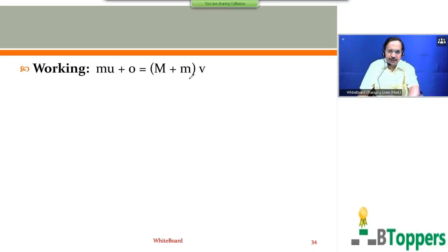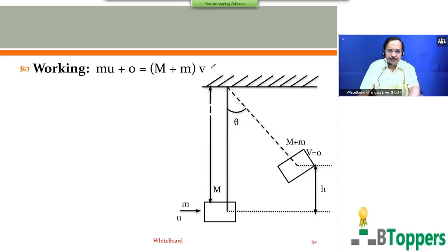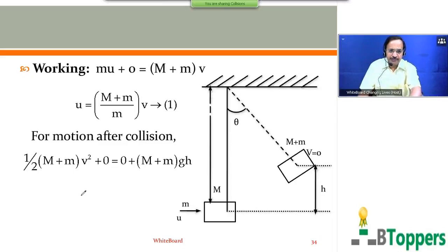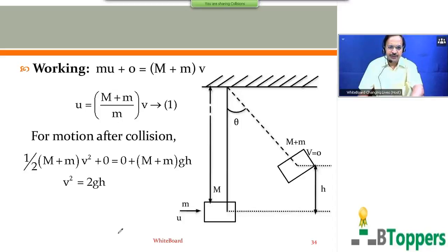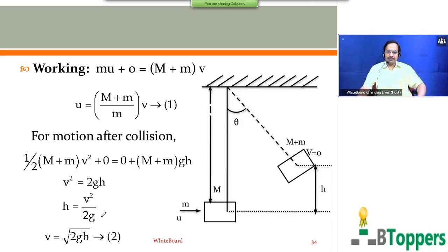From conservation of momentum, we write the momentum just before collision equal to the momentum just after collision: mU = (M + m)v, giving U = ((M + m) / m) × v. For motion after collision, applying conservation of energy: the kinetic energy plus potential energy of the combined mass just after collision equals the kinetic energy plus potential energy at the highest position. This gives v² = 2gh, or v = √(2gh). Substituting into the momentum equation yields the final conclusion.